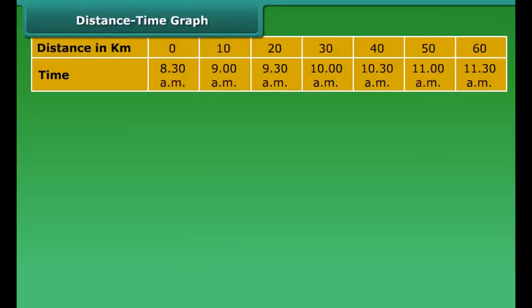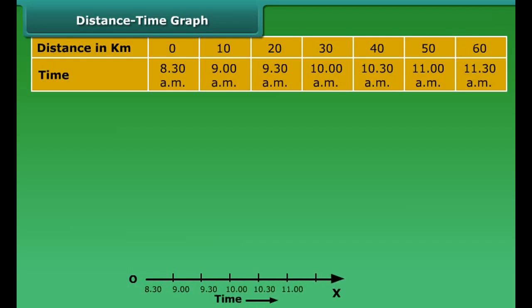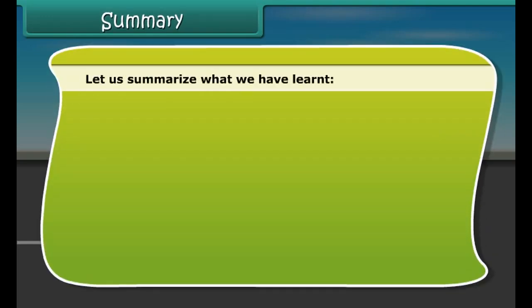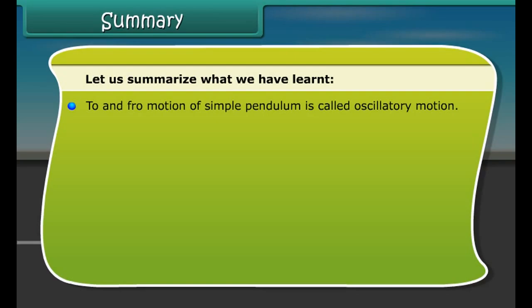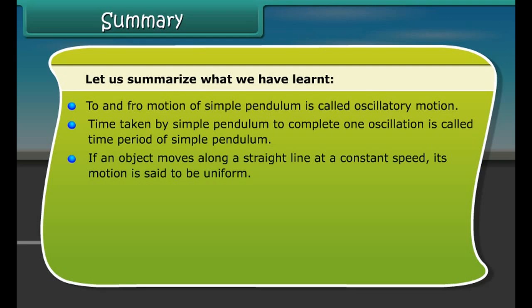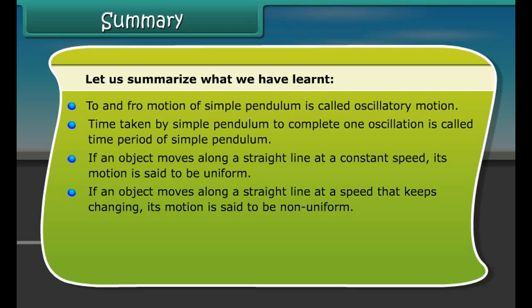Motion of objects can be presented in pictorial form with the help of a distance-time graph. First, draw a horizontal line to represent the x-axis and a vertical line to represent the y-axis, marking them as OX and OY. Measure time along the x-axis and distance along the y-axis. Mark values for time and distance on the respective axes. Plot the points on the graph paper, each point representing a specific combination of distance and time values. Join all the points to get a linear distance-time graph, which shows that the vehicle is moving at a constant speed. From this graph, we can calculate the distance covered at a particular moment, the time at a particular distance, and the speed.